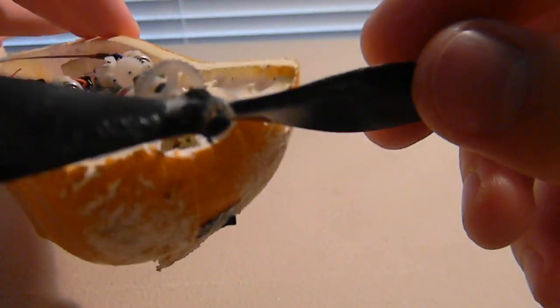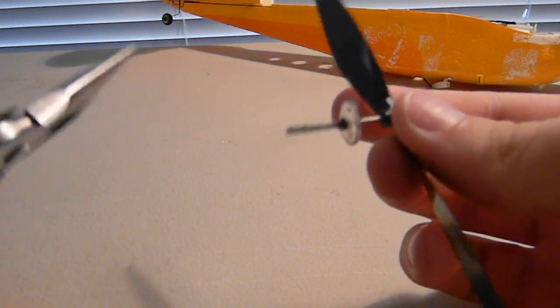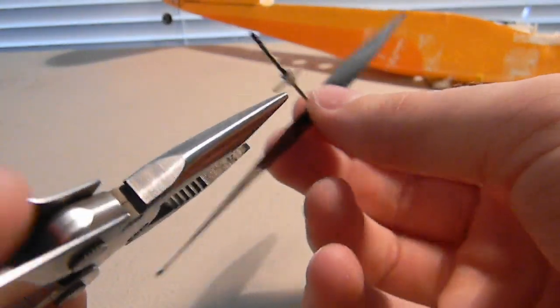Once you have your slot removed, you can slide the gear, shaft, and prop out. What you're going to do now is grab your needle nose pliers again.